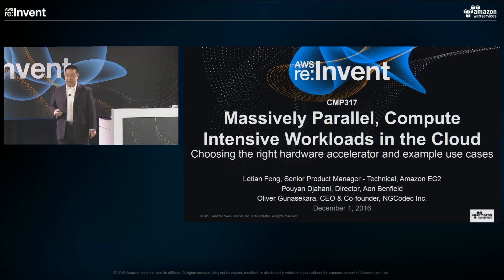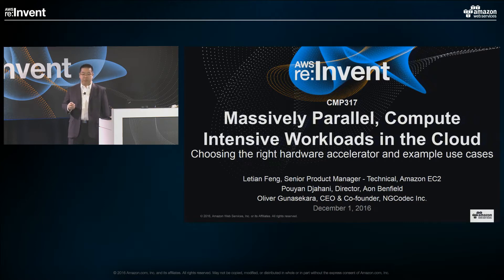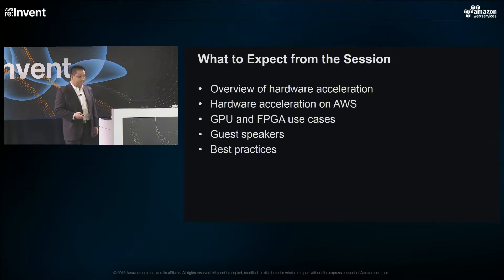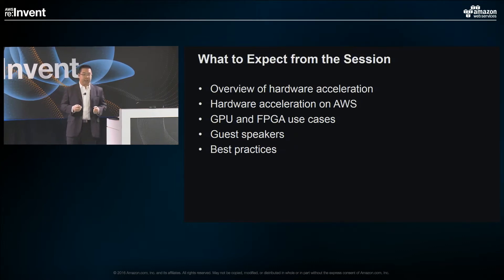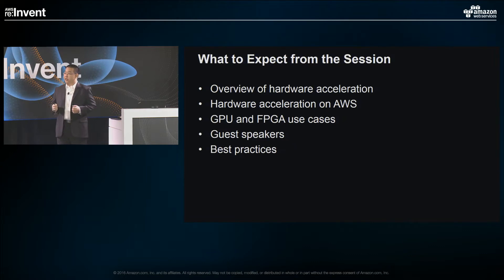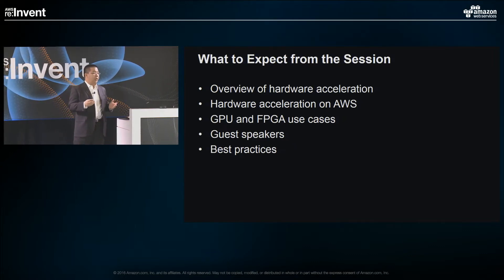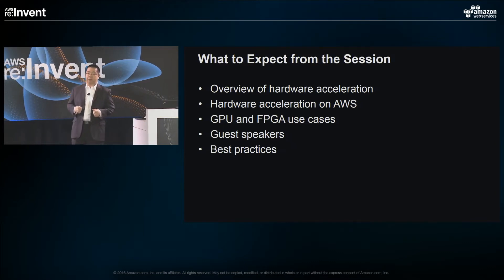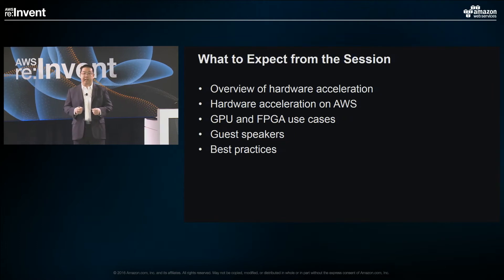As many of you have already noticed yesterday in Andy's keynote, we just announced a preview of our first FPGA product, the F1 instance. This is the fourth accelerated computing instance we have introduced. If you're interested, you can sign up online for the preview. In this session, I'd like to give an overview of hardware acceleration, talk about hardware acceleration on AWS, provide some example use cases, discuss how to choose the right hardware accelerator, and share best practices when using P2 and F1 instances.